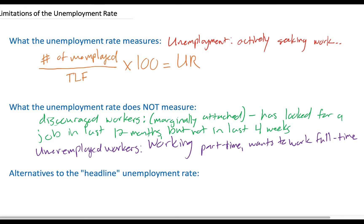So we've identified what the unemployment rate does measure and described two things it does not measure: discouraged workers, those who have given up looking for a job but still wish they could find one, and underemployed workers, those who are working part-time and wish they could be working full-time. In the United States, the Bureau of Labor Statistics, which measures unemployment, is perfectly aware of the official unemployment rate's shortcomings.